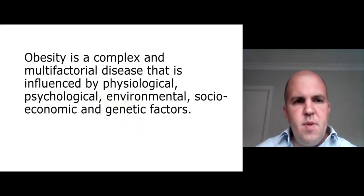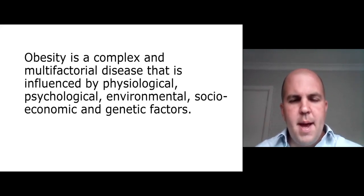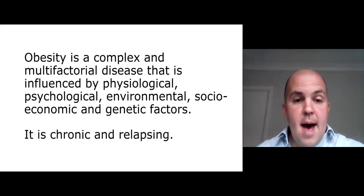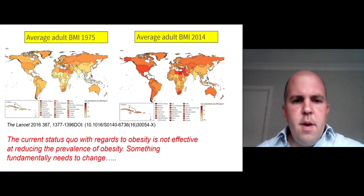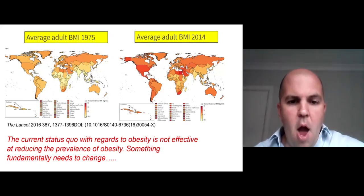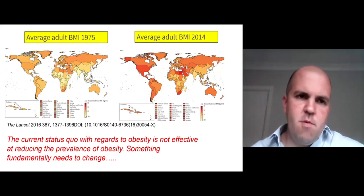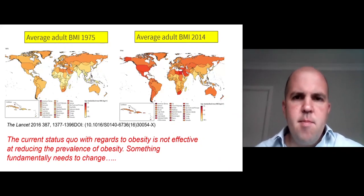The starting point of this talk is that obesity is a complex and multifactorial disease, influenced by physiological, psychological, environmental, socioeconomic, and genetic factors. It's chronic and it's relapsing. We know that the prevalence of obesity is rising markedly and the current status quo isn't effective, so something fundamentally needs to change. Part of what needs to change is recognising obesity as a disease, as part of ensuring equitable access to effective treatments.